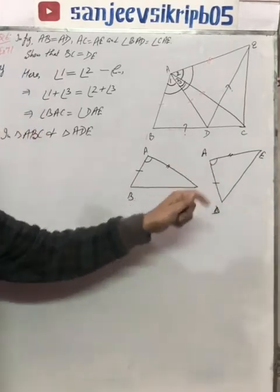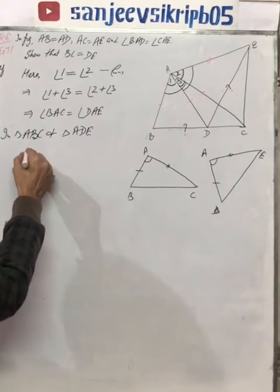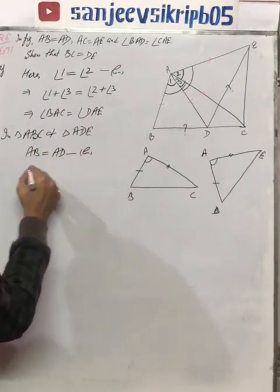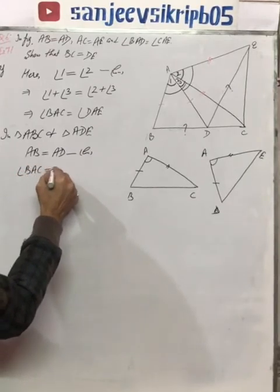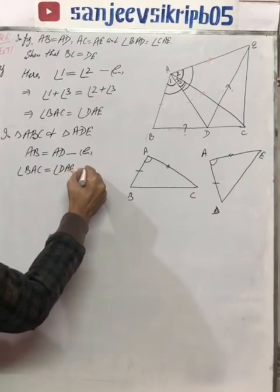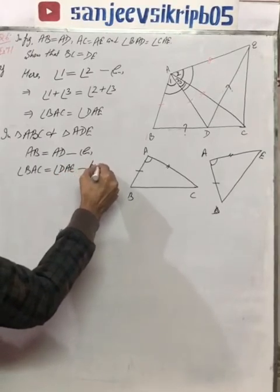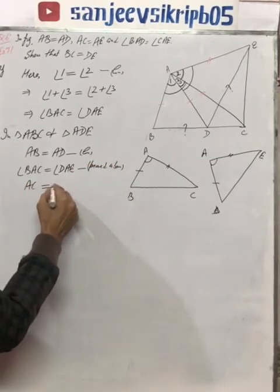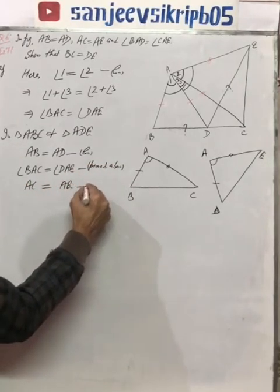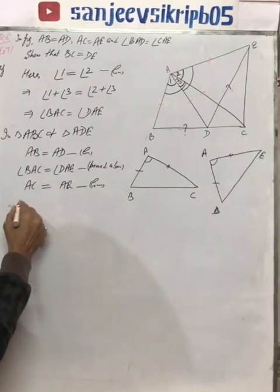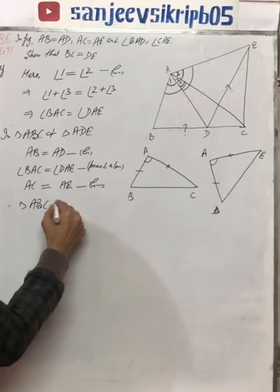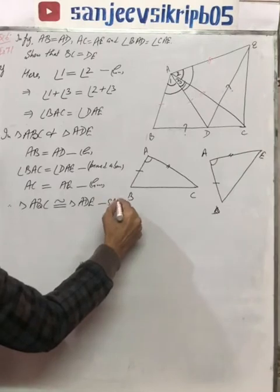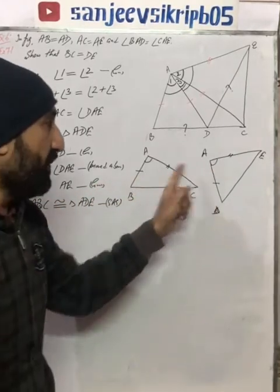Yes, these are congruent by SAS. Let's write this. AB is equal to AD, given. Angle BAC is equal to DAE, we have just proved. Third, AC is equal to AE, again given. That means triangle ABC congruent to triangle ADE by SAS. Triangles are congruent by SAS.